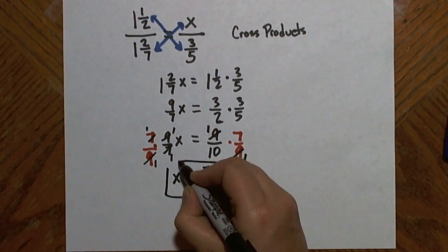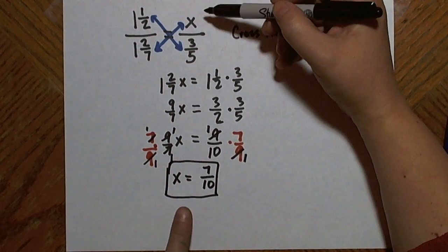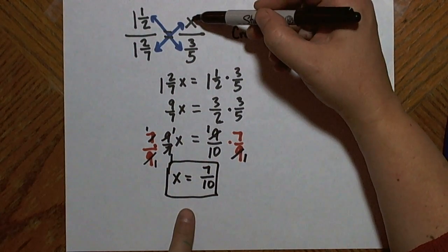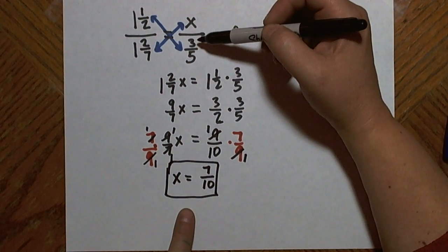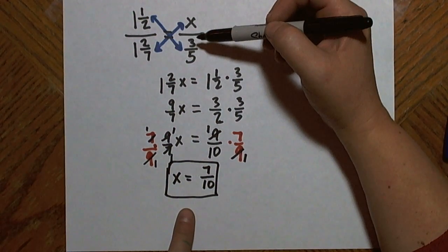So x equals seven tenths is the solution that will make the original proportion true. It will make the two sides equal to each other, the two fractions equal.